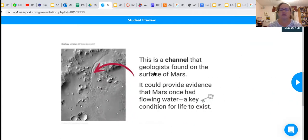This is the channel that geologists found on the surface of Mars. Look at, there's the arrow it shows right here. And it could provide evidence that Mars once had flowing water, which is a key condition for life to exist.